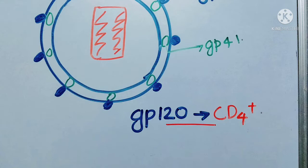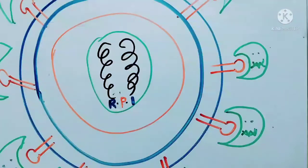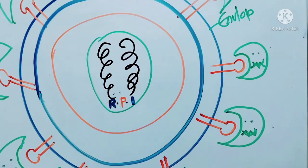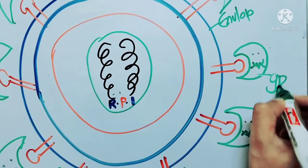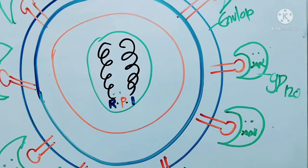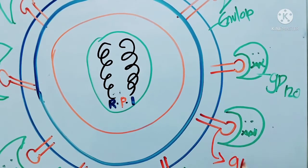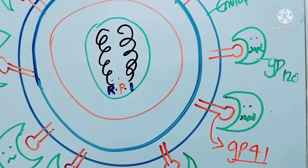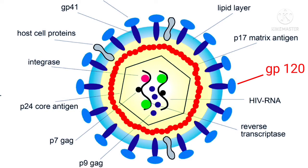Macrophages and T helper cells are called CD4-plus cells. The CD4 receptor is found on T helper cells and monocytes, that is the macrophages. The first and most important step is attachment — the virus attaches to a cell. The envelope of the virus carries the main important protein GP120, which helps with attachment. The transmembrane protein is called GP41. GP41 and GP120 are the most important glycoproteins found on the viral envelope.